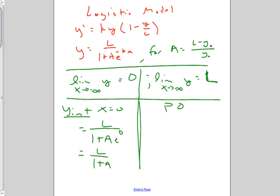And last but not least, our point of inflection is going to occur at the point, let's see we just did this. It's going to occur at ln of 1 over A over negative k, comma L over 2.